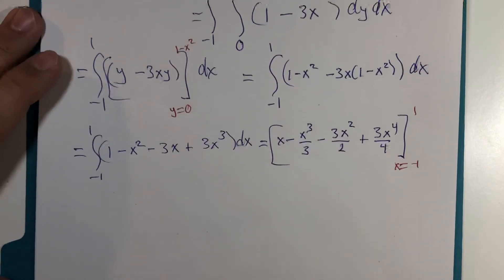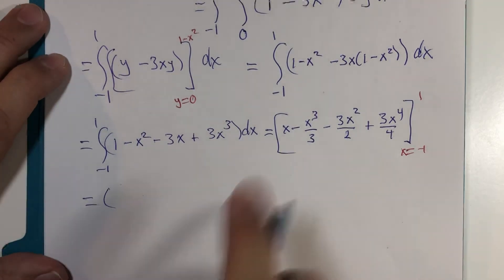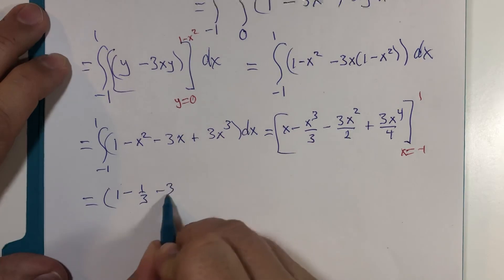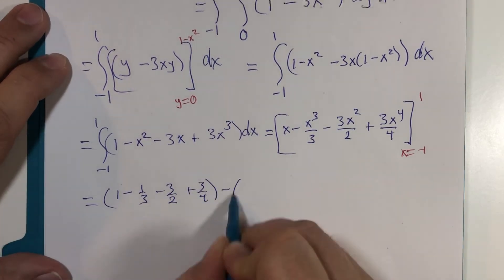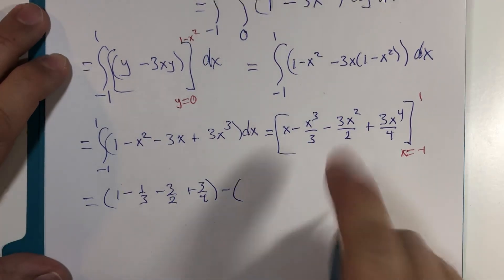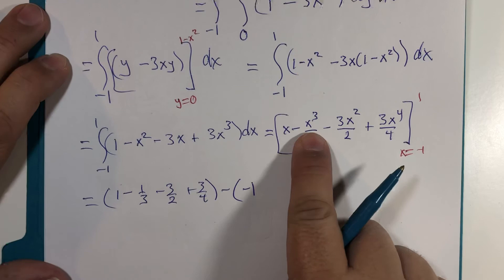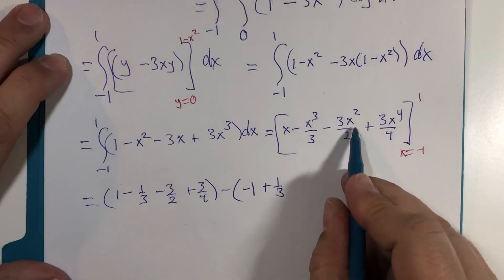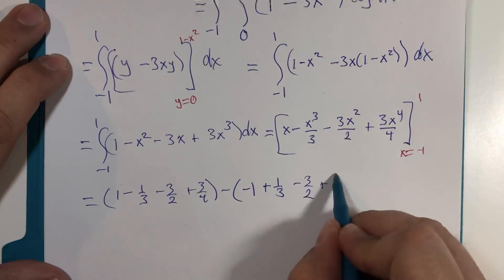x minus x to the third divided by 3 minus 3x to the second divided by 2 plus 3x to the fourth divided by 4. Evaluated from x is negative 1 to positive 1. All right. And this looks like I think I'll go slow. 1 minus 1 third minus 3 halves plus 3 fourths. Subtract. Negative 1. We'll make that negative 1. Negative 1 to the third is negative. That makes it positive. This will stay negative. This will stay positive.